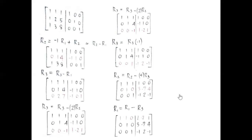To get the second row we subtract R sub 2 minus 4 times R sub 3. The first and third rows are retained as (1,1,1 | 1,0,0) and (0,0,1 | −1,2,−1). The result of the operation in the second row is (0,1,0 | 3,−7,4).